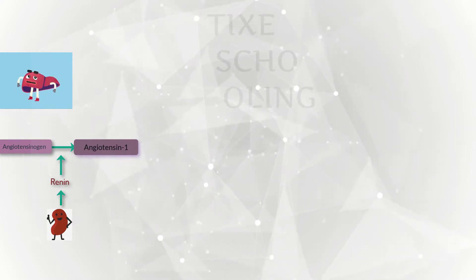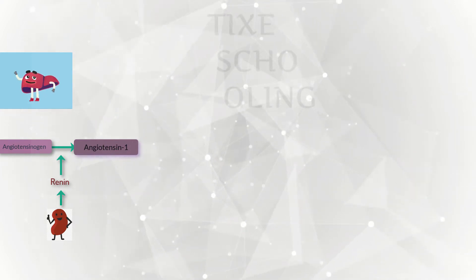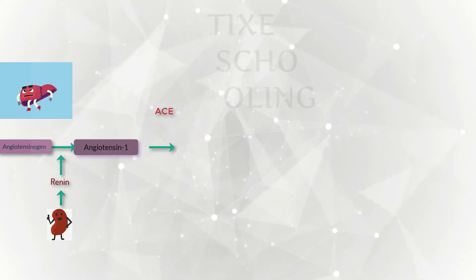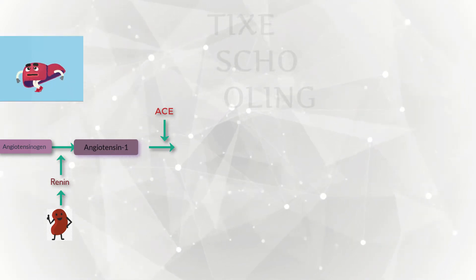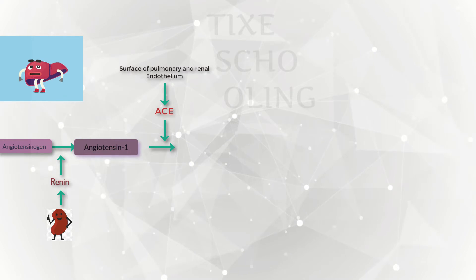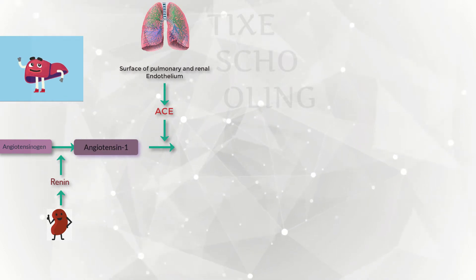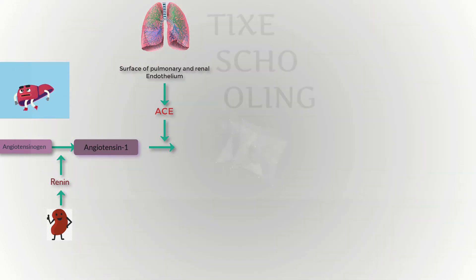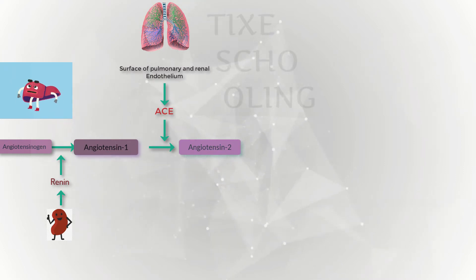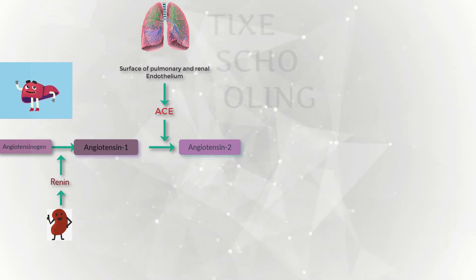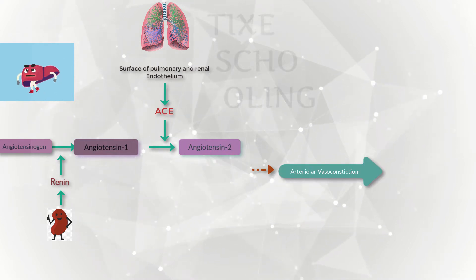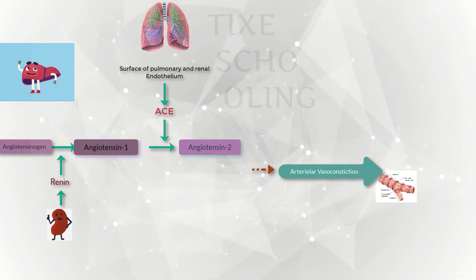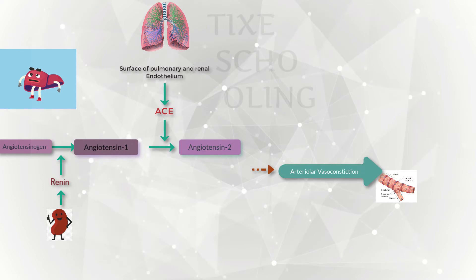Another enzyme known as ACE, or angiotensin converting enzyme, found in the lungs, metabolizes angiotensin-1 into angiotensin-2. Angiotensin-2 causes blood vessels to constrict and blood pressure to raise.